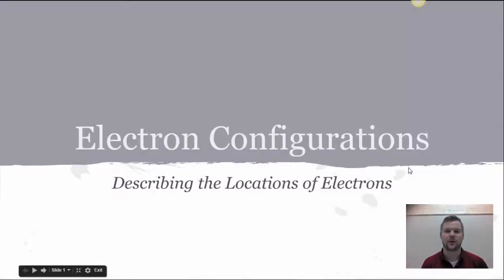Alright, today we're going to talk about electron configurations, and to do that we're going to specifically describe the locations of the electrons. This will be the most specific we get with our description of electrons in this class. At the end of today you should know how to write an electron configuration, draw a dot diagram, and also draw an orbital diagram.